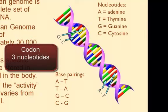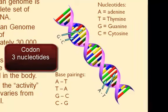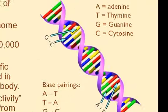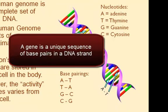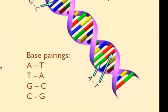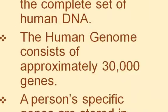The genetic code consists of three-letter words called codons, which are each formed by a sequence of three nucleotides, such as A, C, C, or C, A, G. A specific gene is a unique combination of base pairs, or a unique DNA sequence in a DNA strand. For example, a specific type of gene called a tumor suppressor gene, which is a gene that protects a cell from getting cancer, could have a DNA sequence of base pairs such as G, C, T, A, T, A.